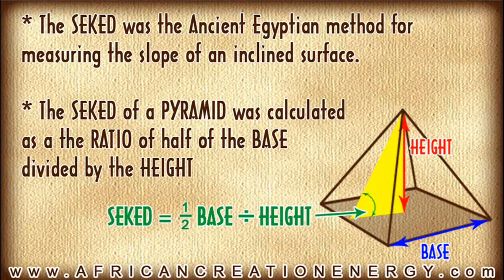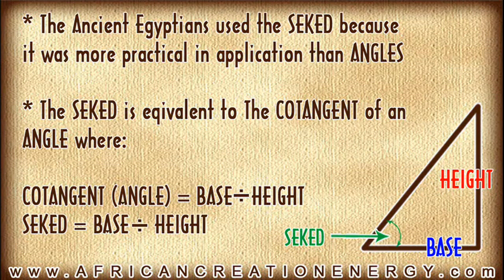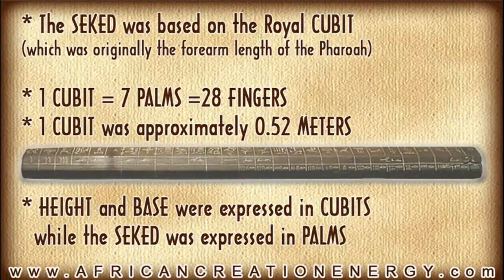The Seqed was an ancient Egyptian method for measuring the slope of an inclined surface. For a pyramid, the Seqed was calculated as the ratio of half of the base of the pyramid divided by the height. The ancient Egyptians used the Seqed because it was more practical in application than the use of angles. The Seqed would be equivalent to our modern expression of the cotangent of an angle, where the cotangent equals the base divided by the height of a right triangle, and the Seqed also equals the base divided by the height of a right triangle.